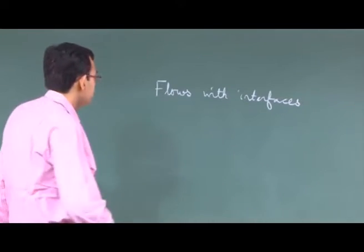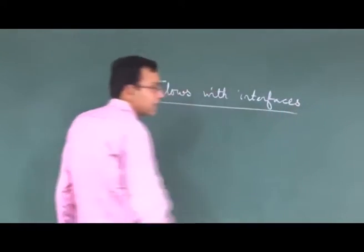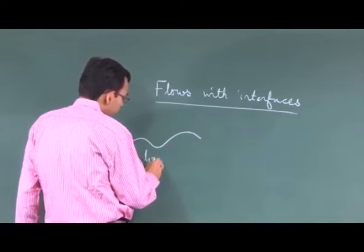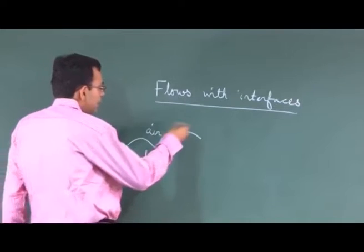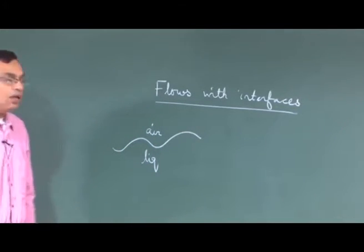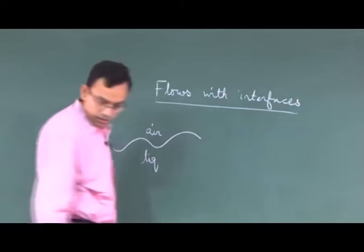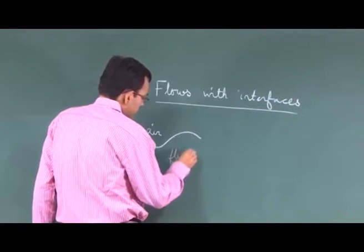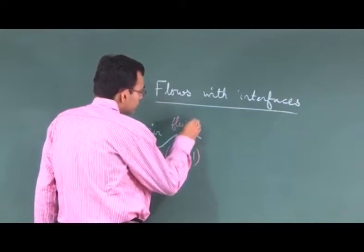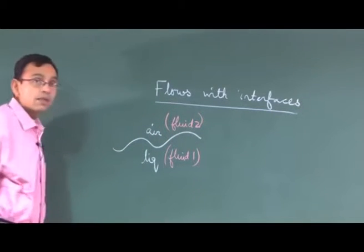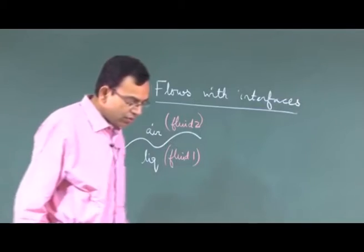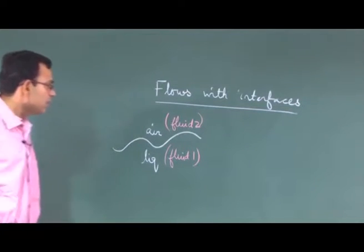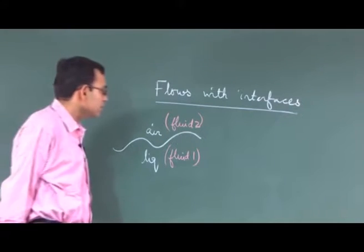Let me give you one example, and we will mainly consider that example in this module: you have a liquid and you have air, and there is an interface between liquid and air. In general, this could be generalized as fluid 1 and fluid 2. We will try to understand what type of boundary condition we should give at the interface between the two fluids.